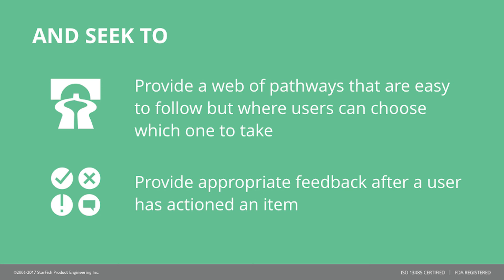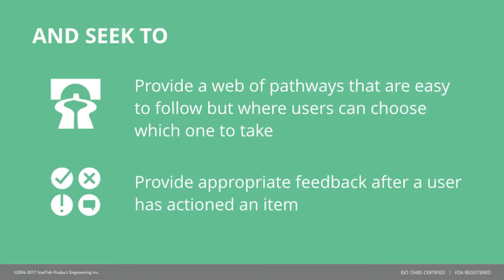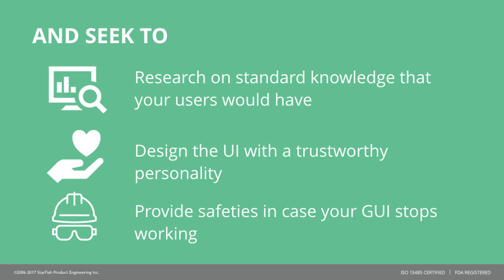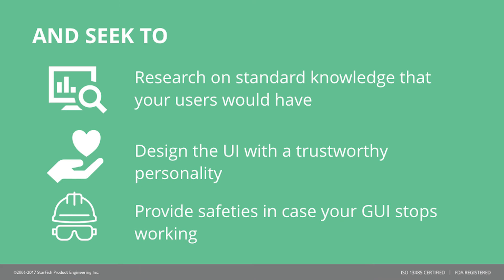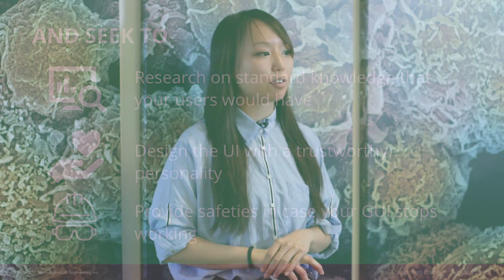Things to do: give users options and provide a web of pathways that are easy to follow but allow users to choose their own route. Provide appropriate feedback after users action an item — use animation, but only the appropriate amount. Research the standard knowledge your users already have and apply it to your design. Design the user interface with a trustworthy personality so users believe in the device — that is ultimately your goal. And provide analog or manual safeties in case your graphical user interface stops working.